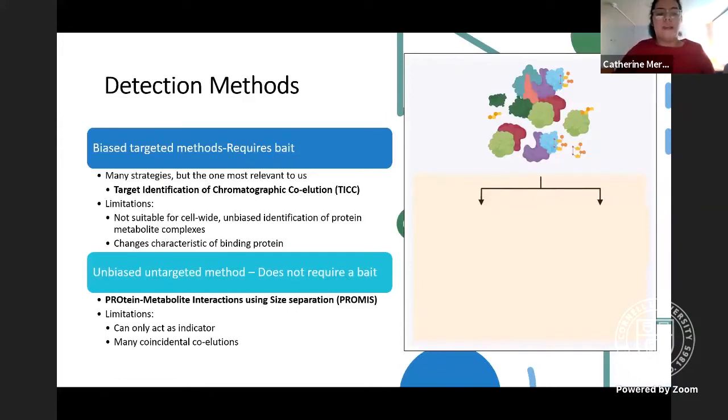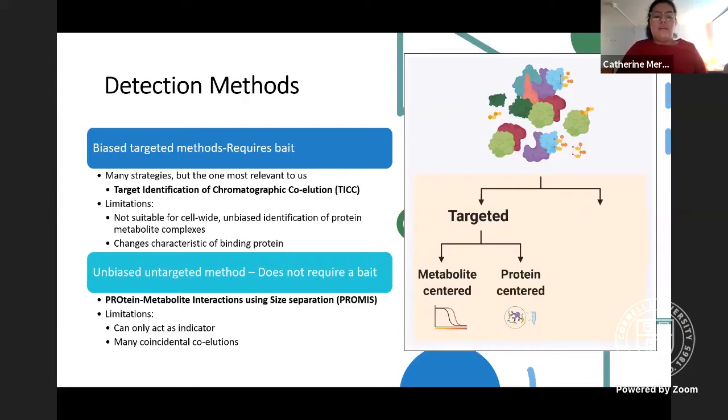So the different types of detection methods out there are either targeted, which require a protein or metabolite bait to fish out interactors. There are many different types of methods out there for detecting targets that can either be metabolite or protein-centered. The most relevant to us is target identification chromatographic collusion, or TIC. I'll go further into detail about this later.